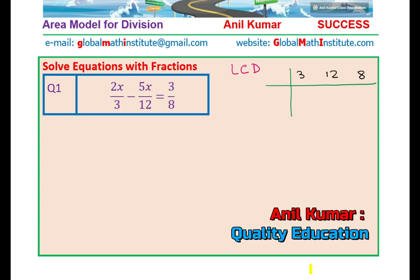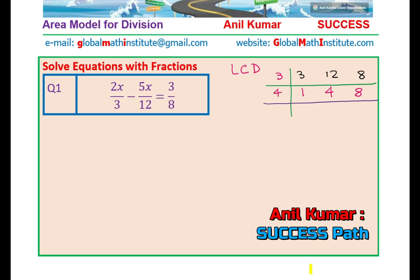Two of them can be divided by 3. So let us take out those factors: 3 goes 1 time, 12 goes 4 times, and 8 you cannot divide by 3 so leave it as such. Now 4 and 8 share a common factor of 4: 4 times 1 and 4 times 2 is 8. So the lowest common denominator is 3 times 4 times 2, which is 24.